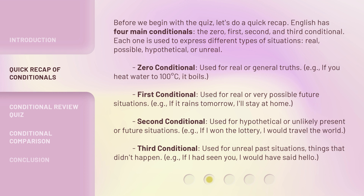Second conditional: used for hypothetical or unlikely present or future situations. For example, if I won the lottery, I would travel the world. Third conditional: used for unreal past situations — things that didn't happen. For example, if I had seen you, I would have said hello.